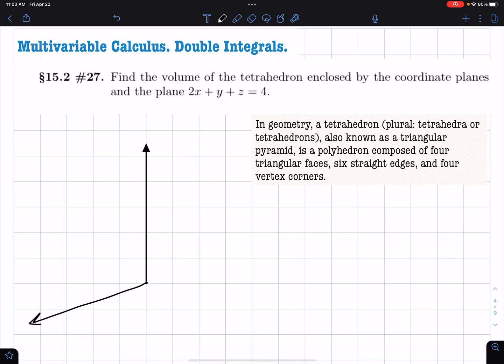Now I have this definition of a tetrahedron written down there, copied straight from Wikipedia, and it says a tetrahedron is also known as a triangular pyramid and it's a polyhedron composed of four triangular faces. You can just read right there what it says.